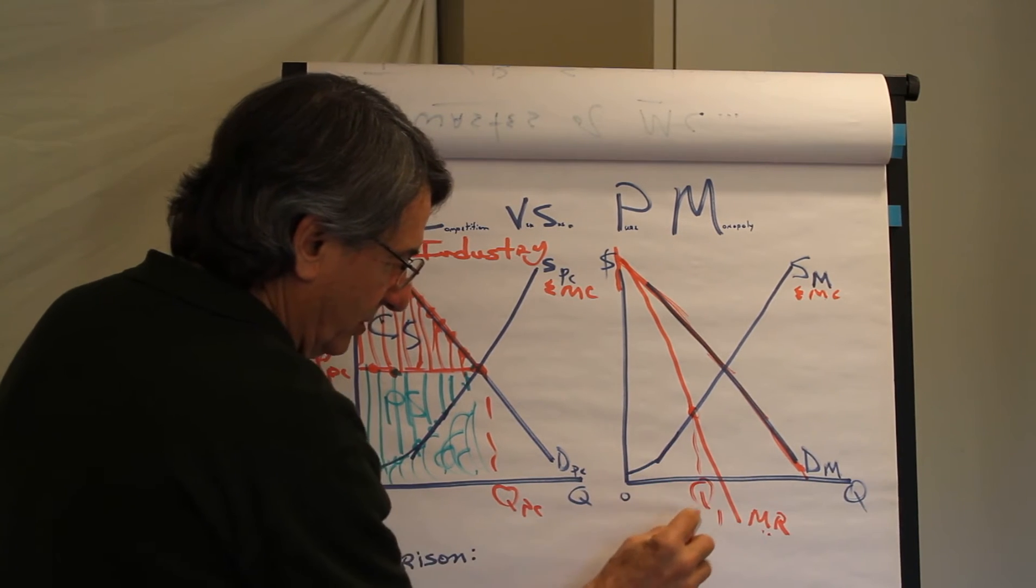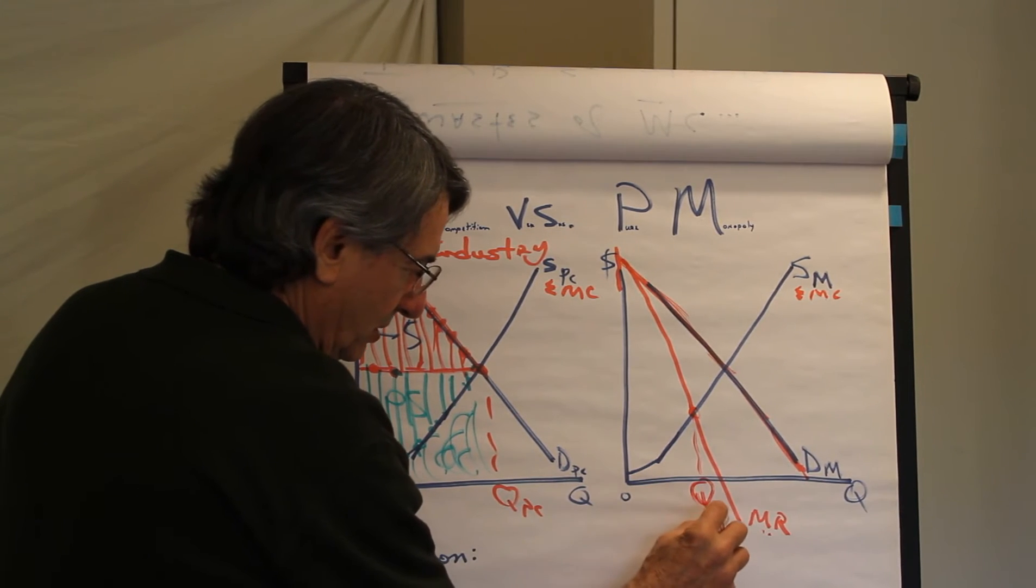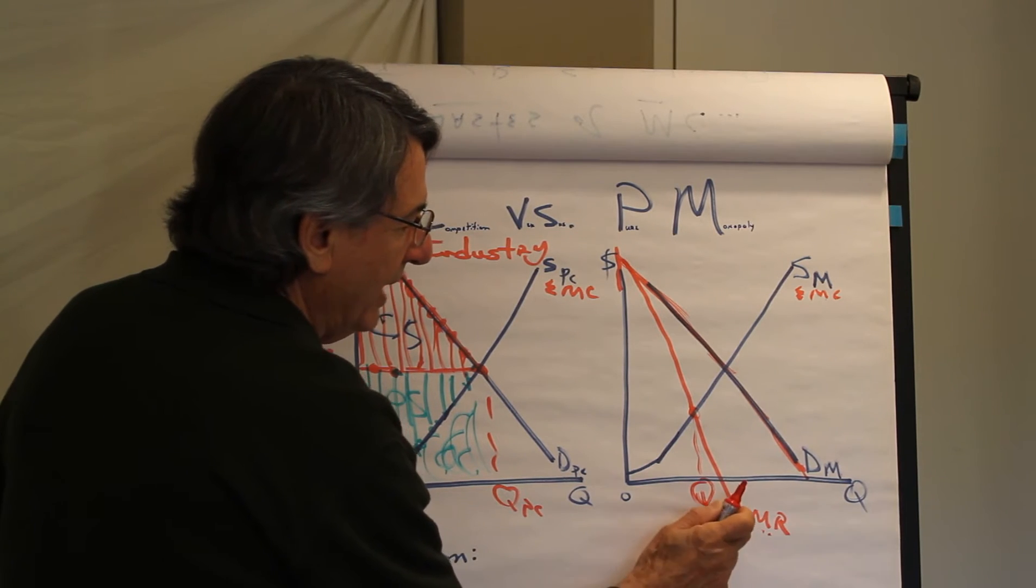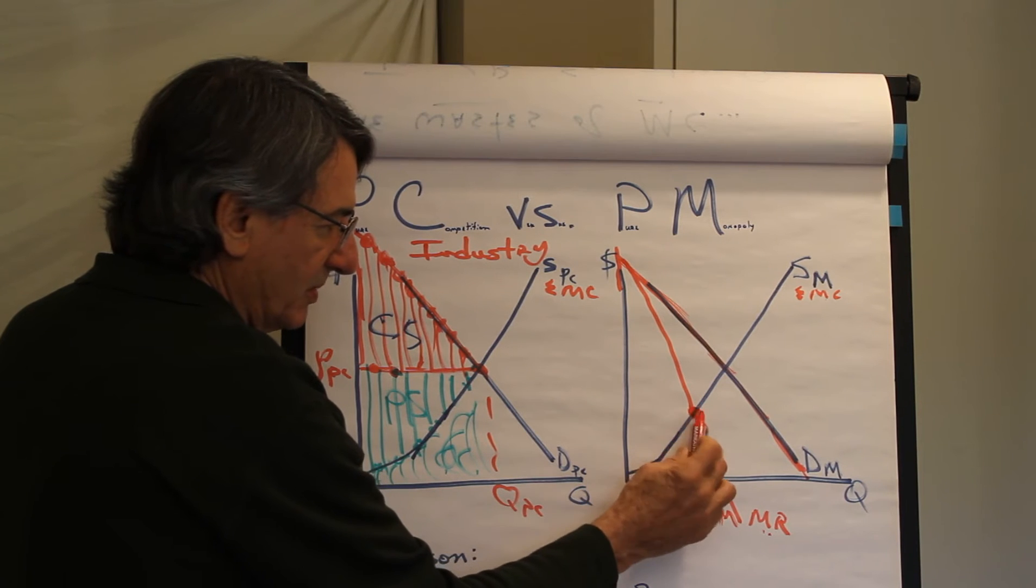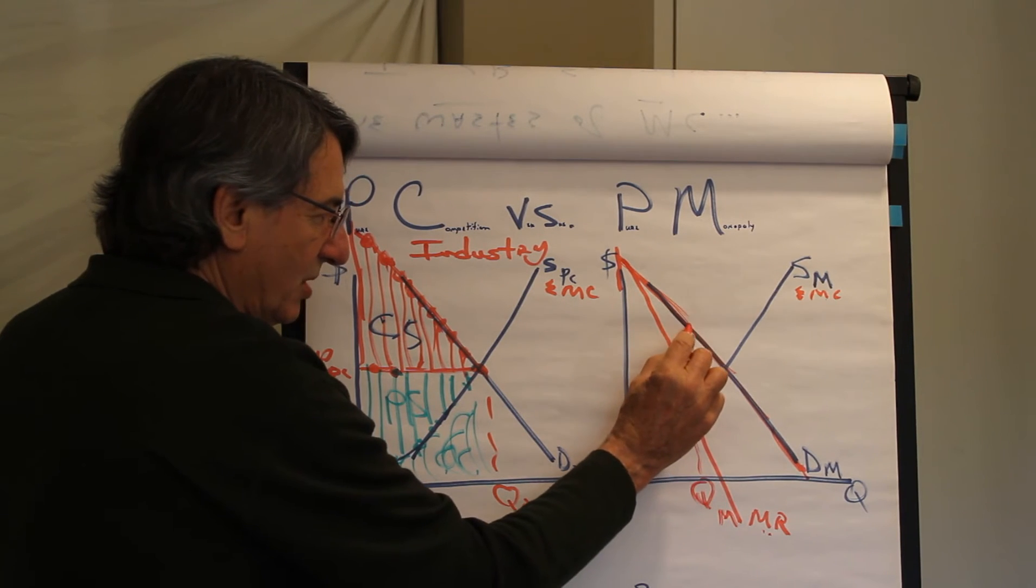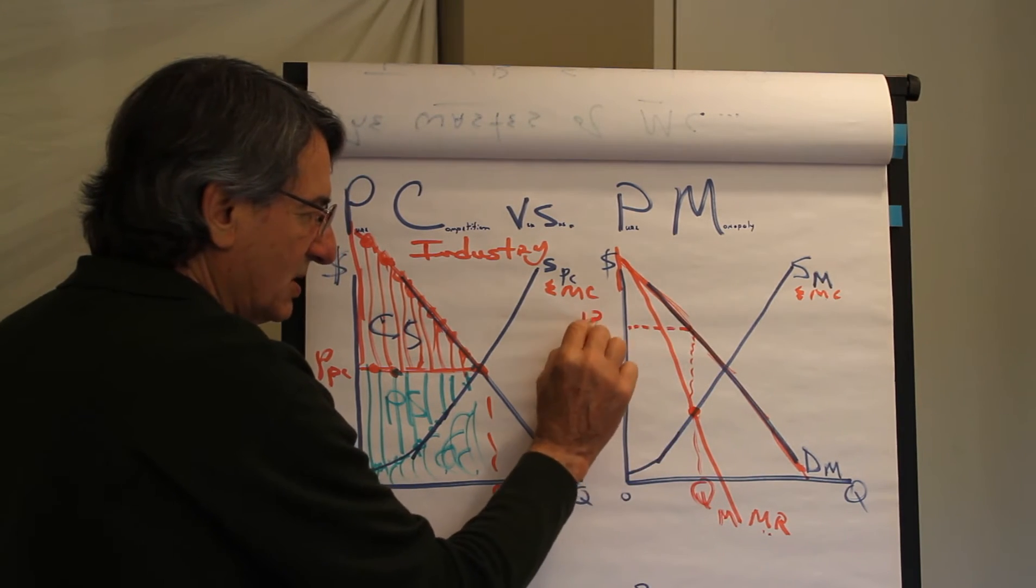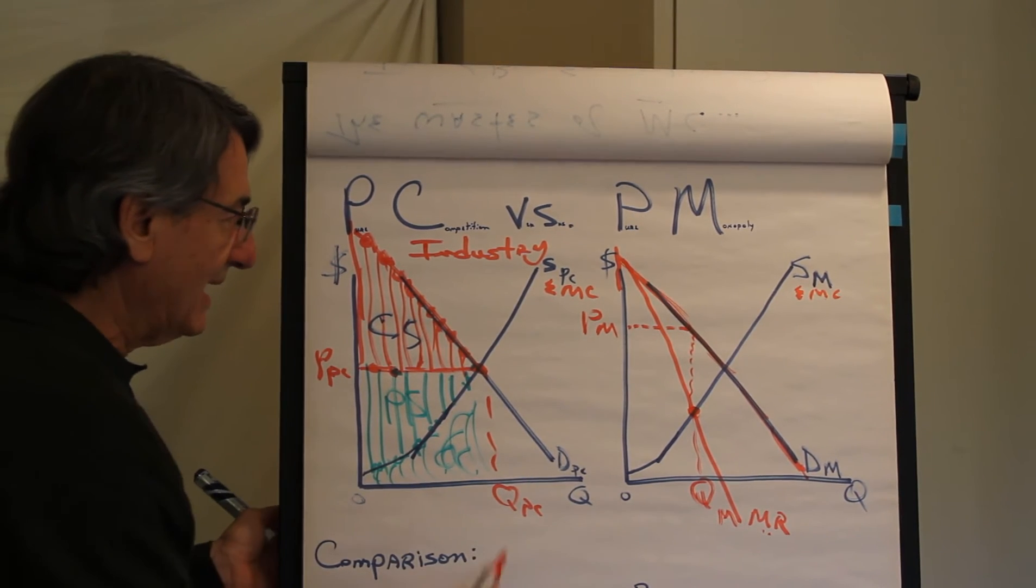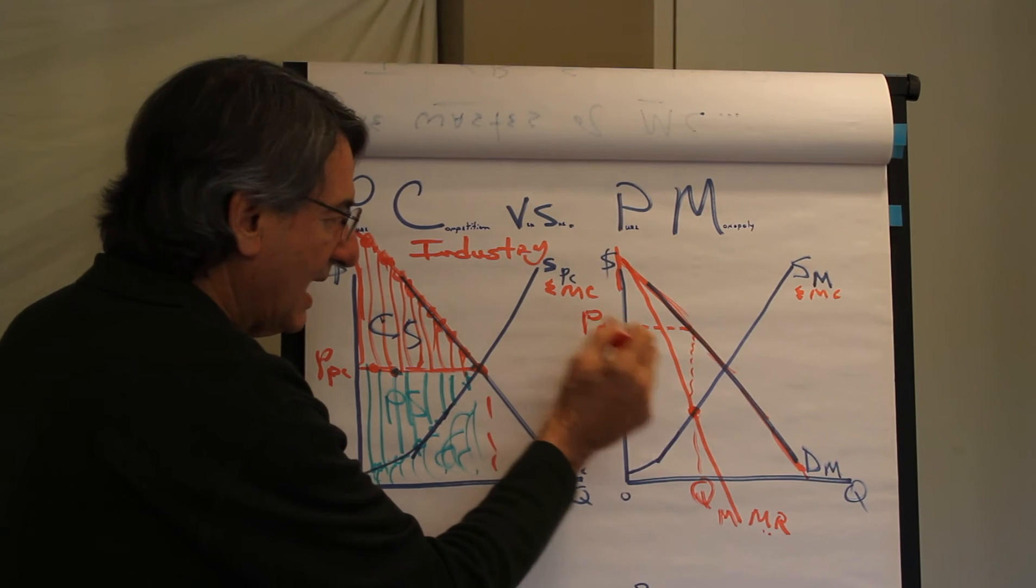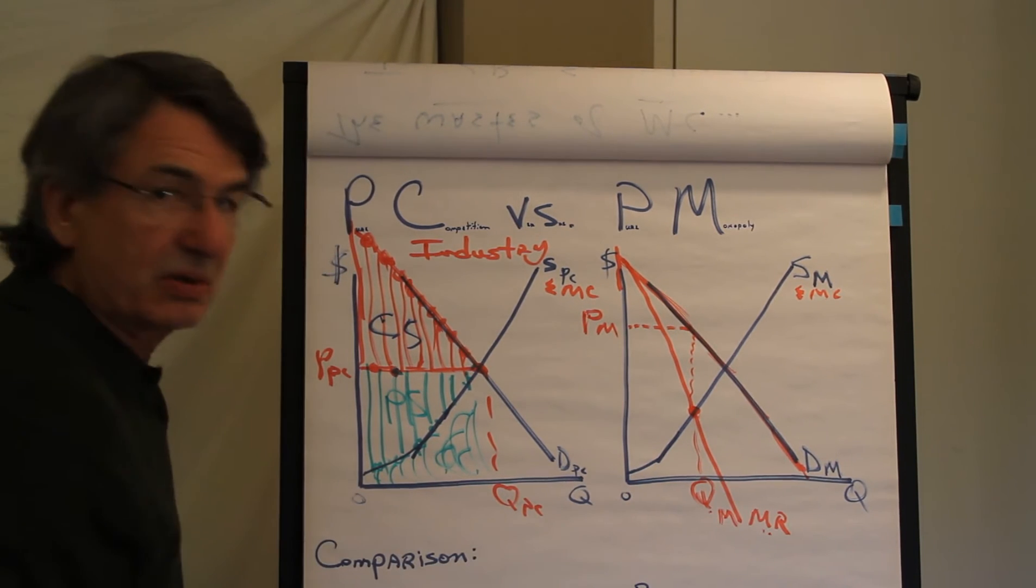And so if this is the marginal cost, that's the marginal revenue. This will be the quantity I will choose to produce. That will be my monopoly quantity. Profit maximizing where marginal revenue equals marginal cost. And the price I will charge comes from demand. So this is the price the monopoly will charge. So you can see that, first of all, the price is higher and the quantity produced is lower.